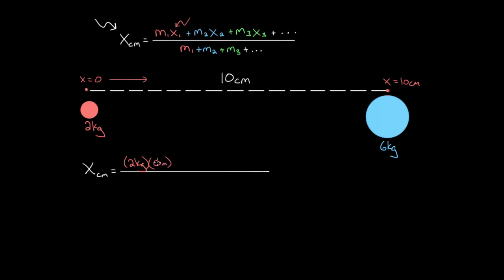So this term's just gonna go away, which is okay. And we're gonna have to add to that M two, which is six kilograms, times the position of M two. Again, we can choose whatever point we want, but we have to be consistent. We already chose this as X equals zero for mass one, so that still has to be X equals zero for mass two. That means this has to be 10 centimeters now.